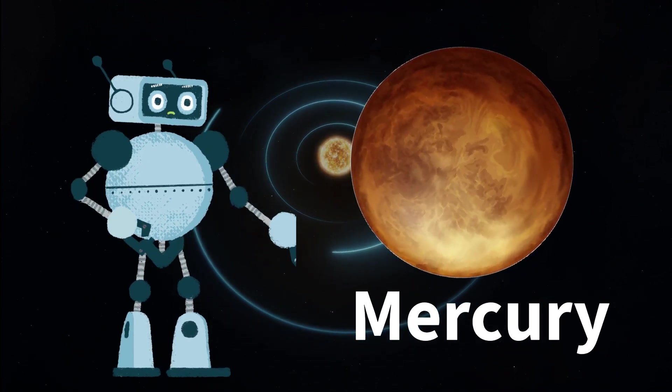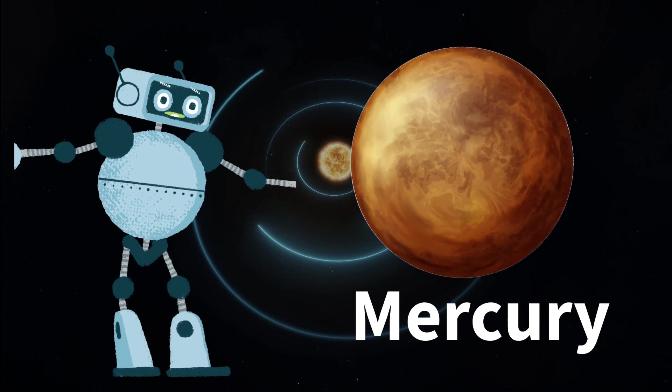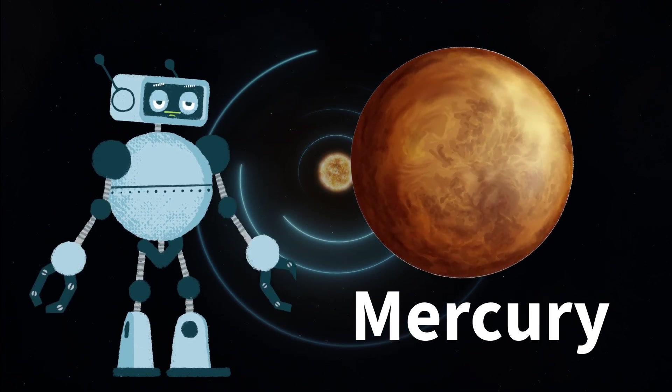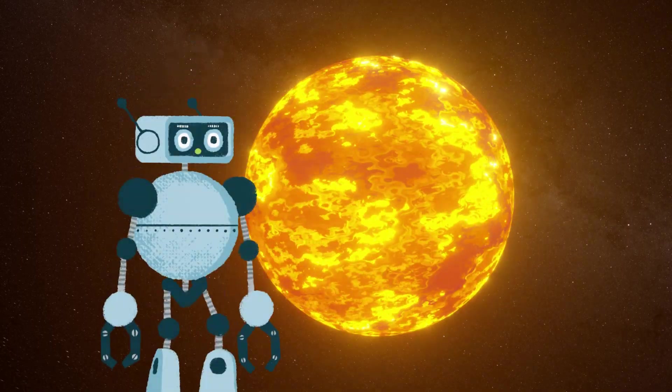Mercury has a very thin atmosphere composed mostly of oxygen, sodium, and hydrogen.